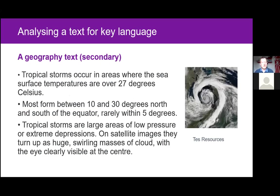Here's an example of how you might analyze a text for key language. The barrier to learning for learners with EAL is with their English language, not with their content knowledge or other cognitive skills. So whatever we do needs to teach them an area of English language — grammar or vocabulary. We can't teach everything at once, so we need to make judicious choices. What you're looking for is a repeating pattern, a grammatical or lexical regularity — a particular vocabulary feature or grammatical structure that reoccurs in your texts and your subject.